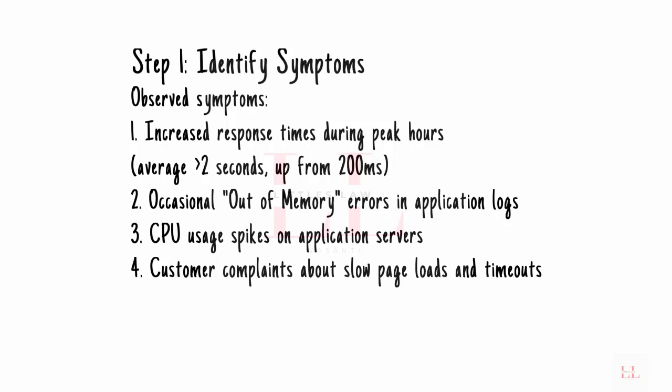The third symptom is CPU usage spikes on the application server, especially during peak hours. The possible causes are: high load, where increased traffic leads to higher CPU usage as servers handle more requests; inefficient processing, involving inefficient algorithms or CPU-intensive tasks; and — the main focus here — garbage collection in Java environments, where frequent or inefficient GC due to memory pressure can cause significant CPU spikes.